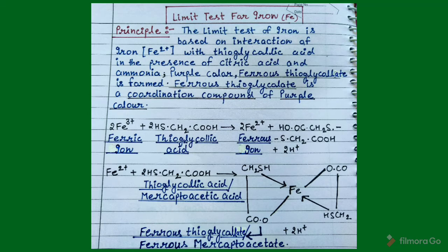Thioglycolic acid converts ferric iron (Fe3+) to ferrous iron (Fe2+). Ferrous iron, also known as ferrous mercapto acetate, then reacts further to form ferrous thioglycolate.